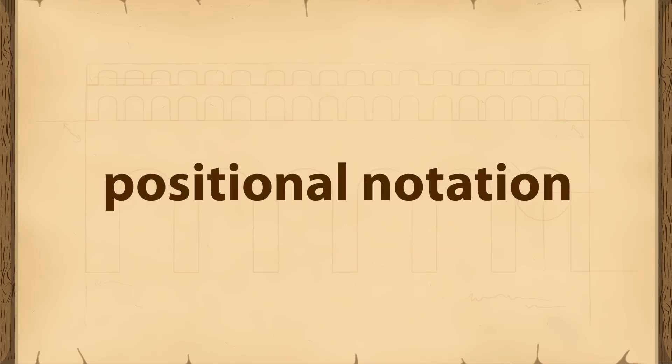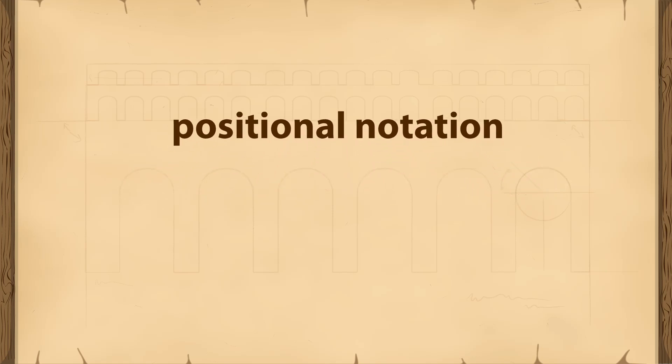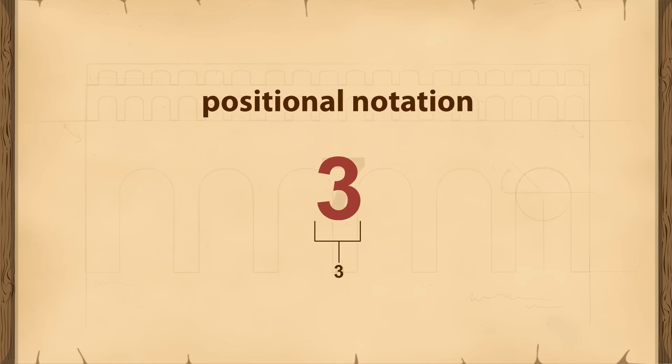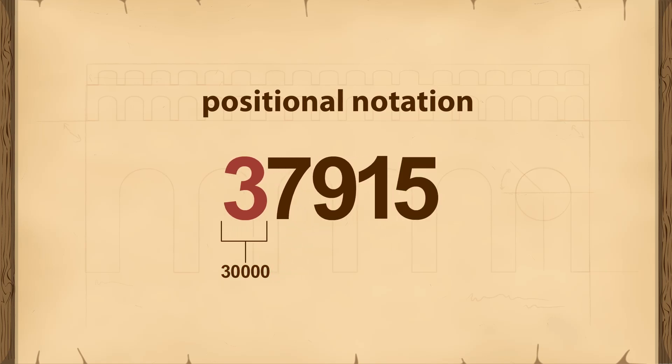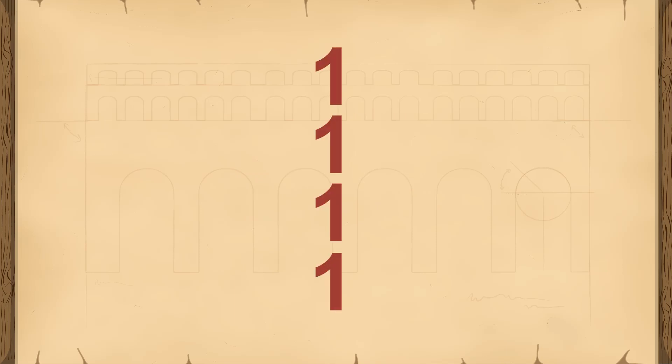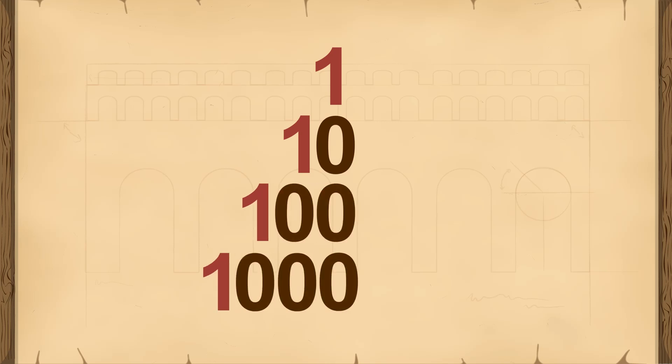Our modern number system is an example of positional notation. In positional notation, the same symbol represents different quantities depending on its position in the number. For example, the symbol 1 can represent 1, 10, 100, 1000, and so on.